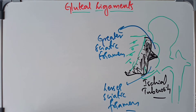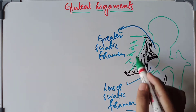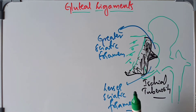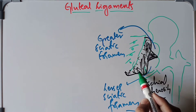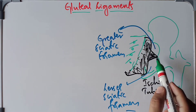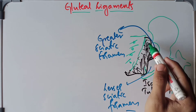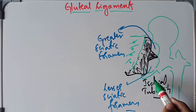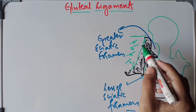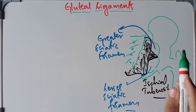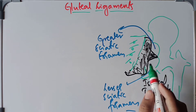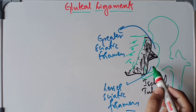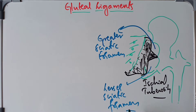Today we are going to discuss the structures passing through the greater sciatic foramen as well as the lesser sciatic foramen. This is the hip bone; we have the femur, the sacrum, and the coccyx. We have two important gluteal ligaments: the sacrotuberous ligament, attaching from the sides of the sacrum and coccyx to the ischial tuberosity, and the sacrospinous ligament, attaching from the sides of the sacrum and coccyx to the ischial spine. These two ligaments divide the greater and lesser sciatic notches into the greater sciatic foramen and the lesser sciatic foramen.